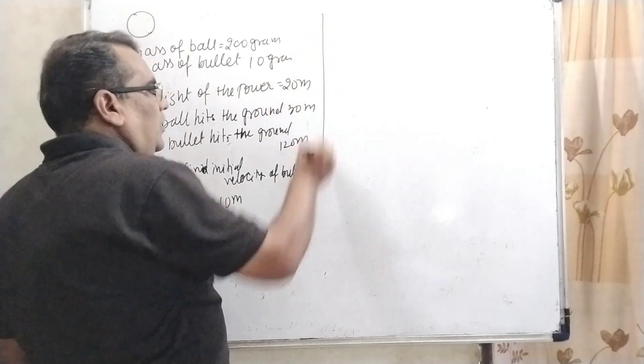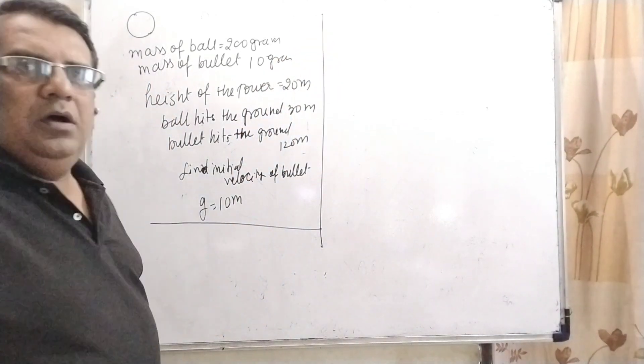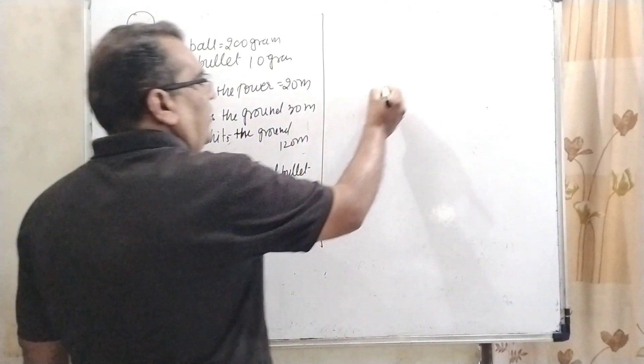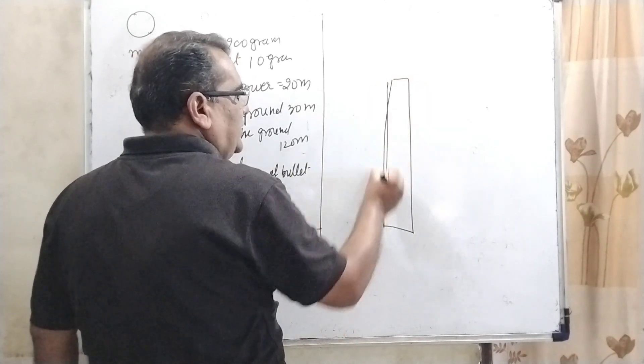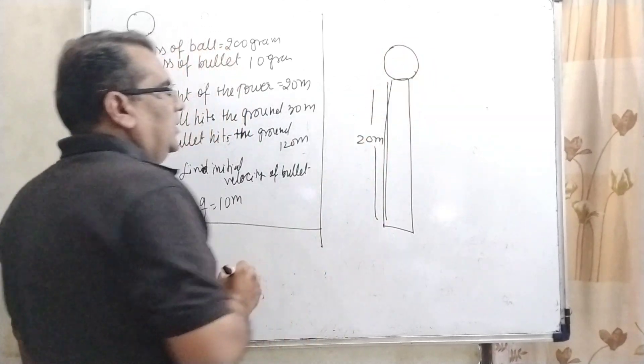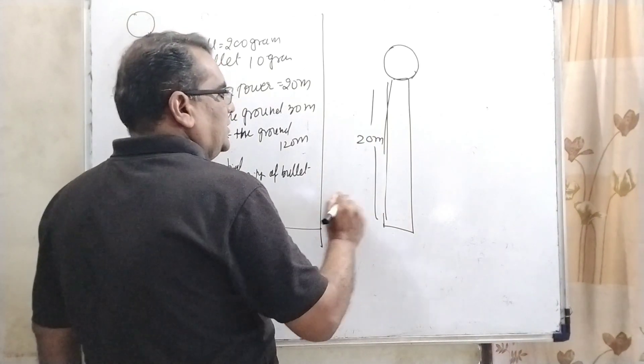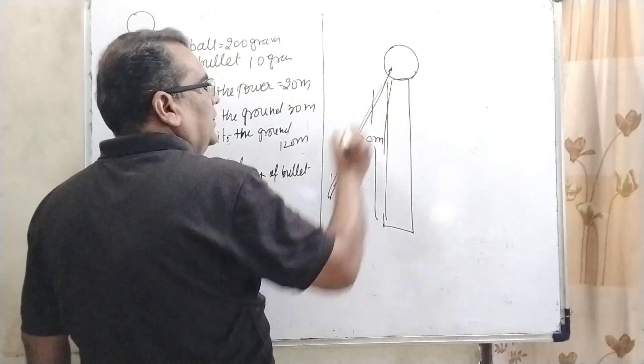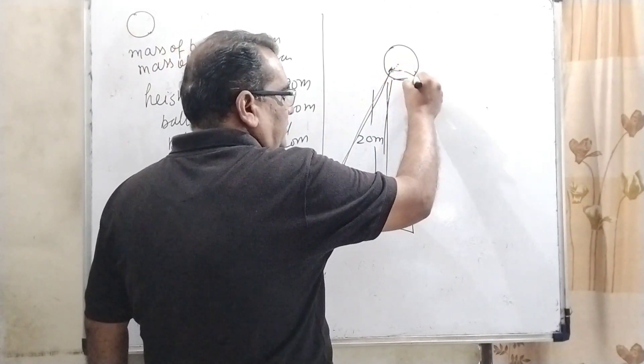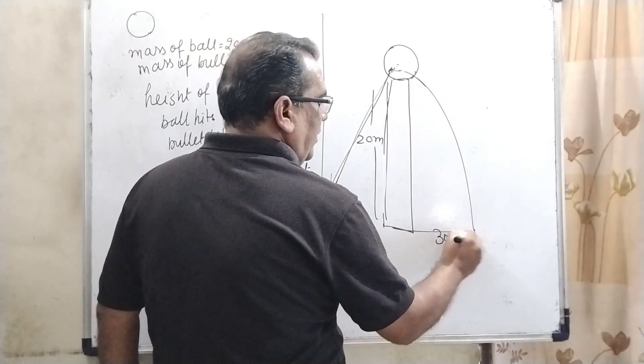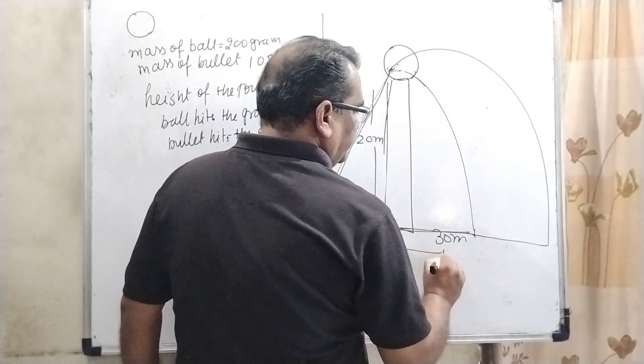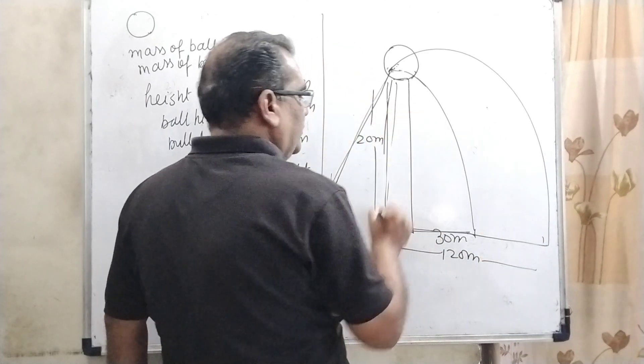This question is based on laws of conservation of momentum and projectile motion. And what does the question say? Here we have given a vertical post. Its height is 20 meter. A ball is kept over it. And a bullet hits this ball and after collision, the ball falls 30 meter away from the vertical post and the bullet falls 120 meter away from the post.